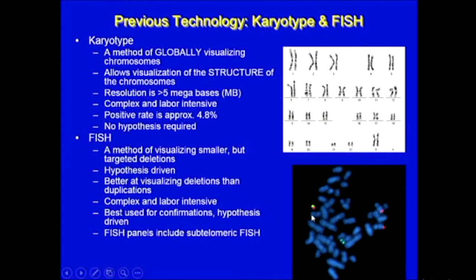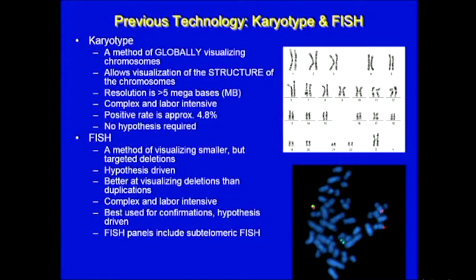The field of cytogenetics went through good changes — now we can tag certain spots within the genome using FISH probes, or fluorescent in situ hybridization. This became a simple counting experiment: do you have two dots, three dots, or one dot? For any specific gene you're interested in interrogating, you can simply put a FISH probe on it and see whether there's an extra copy or a missing copy. It's a wonderful thing to have this FISH technology.